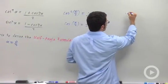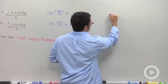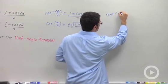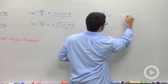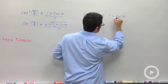Now, similarly, we make the same substitution: alpha becomes theta over 2 in the sine squared identity, and we get 1 minus cosine theta over 2.